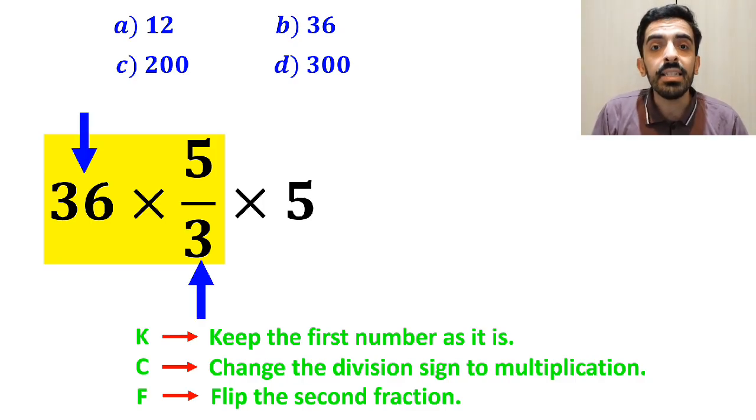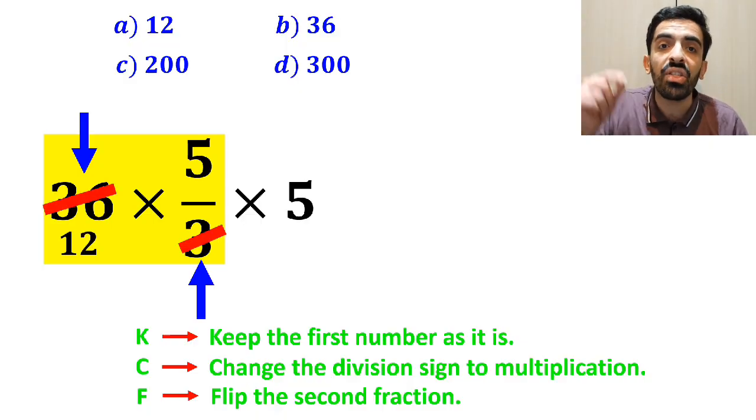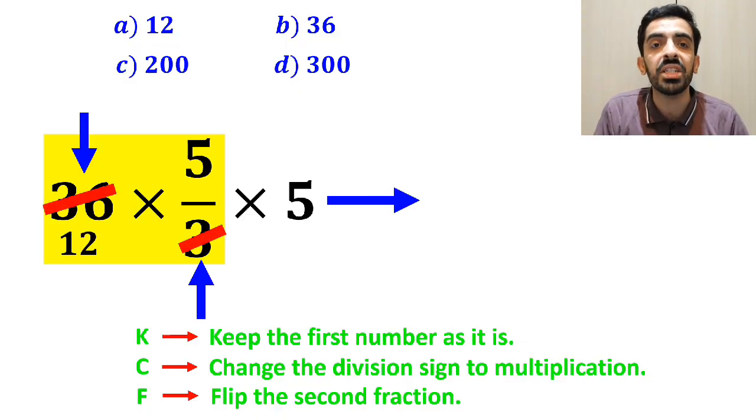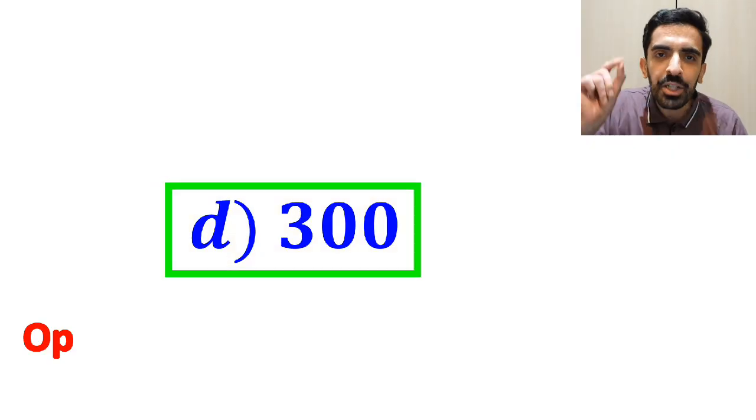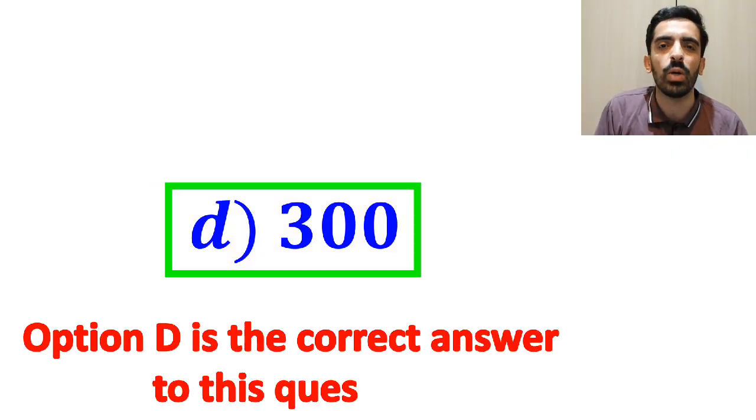Now, we can easily simplify the number 36 with the 3 in the denominator, and instead of this expression, we can write 60 multiplied by 5, which finally gives us the answer 300. Therefore, option D is the correct answer to this question.